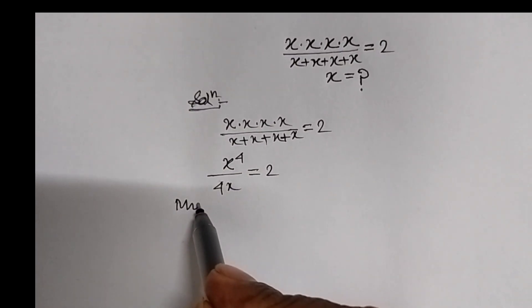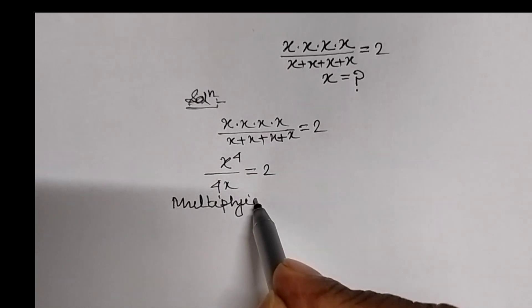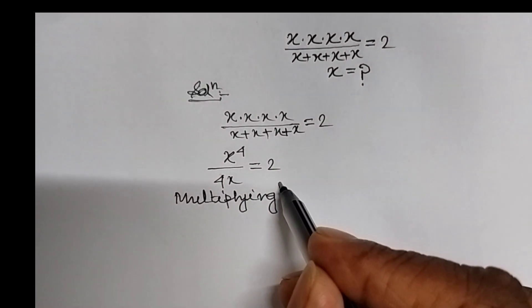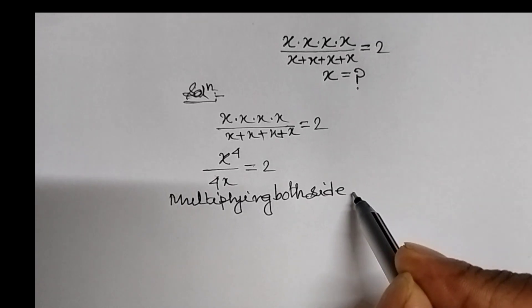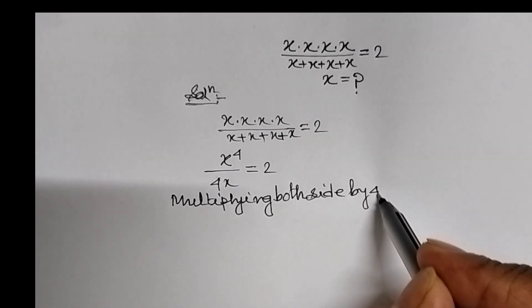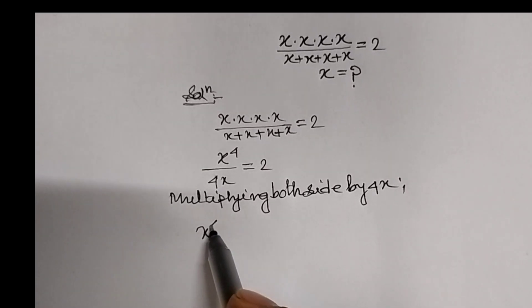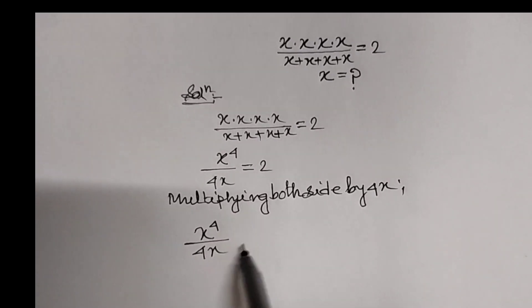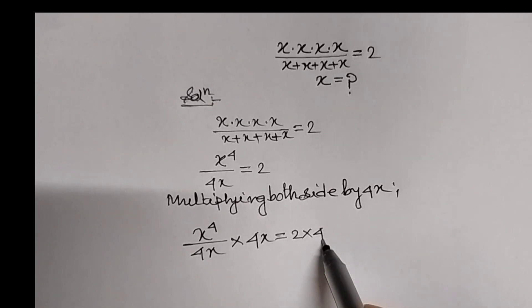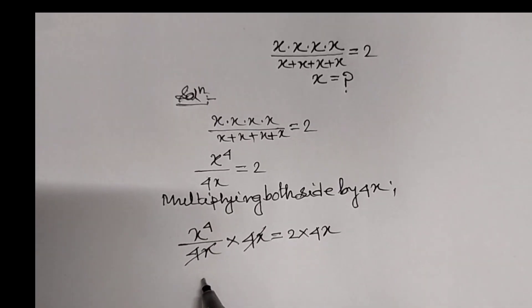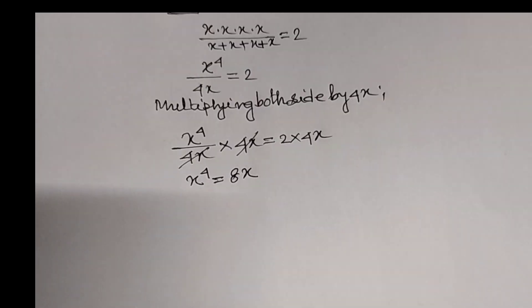Now we will have to multiply both sides by 4x. Multiplying both sides of the above equation by 4x, we get x power 4 upon 4x into 4x equal to 2 into 4x. The 4x cancels, so x power 4 equal to 8x.